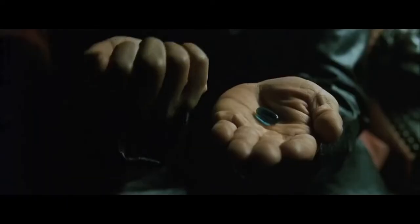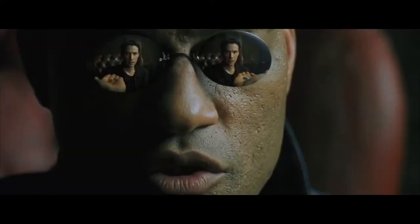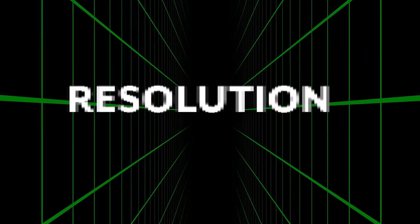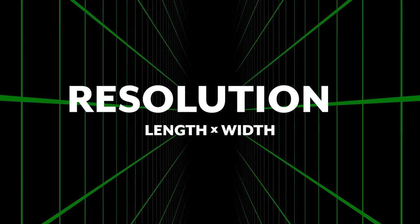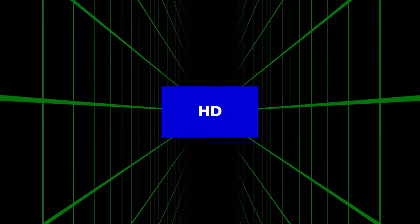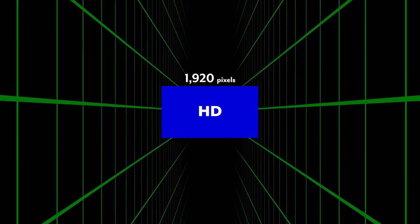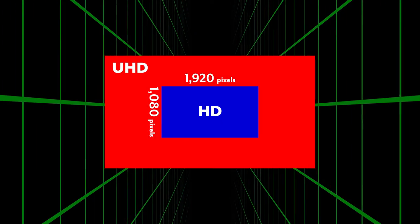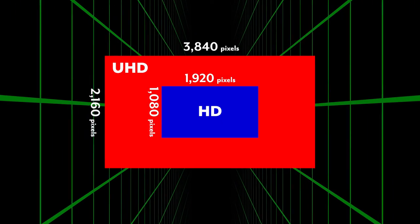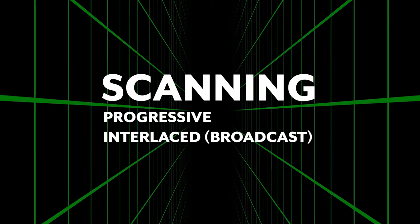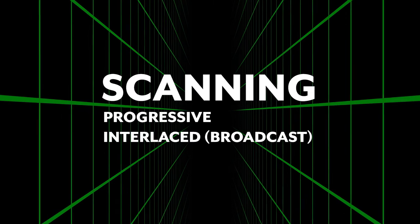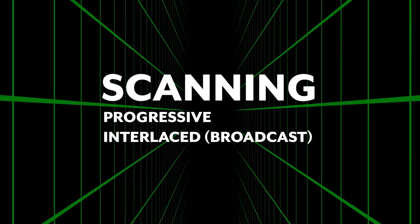Now let's enter the file. When we rip open the package, we can finally see what we have. First thing here is resolution — the dimensions of this thing. The item in the box is actually this length and this width. If it's a traditional HD video, it's 1920 pixels wide by 1080 pixels high. If it's UHD, it's 3840 by 2160. And also scanning — is it progressive or interlaced? Most of the time it's progressive unless you're dealing with a broadcast signal.